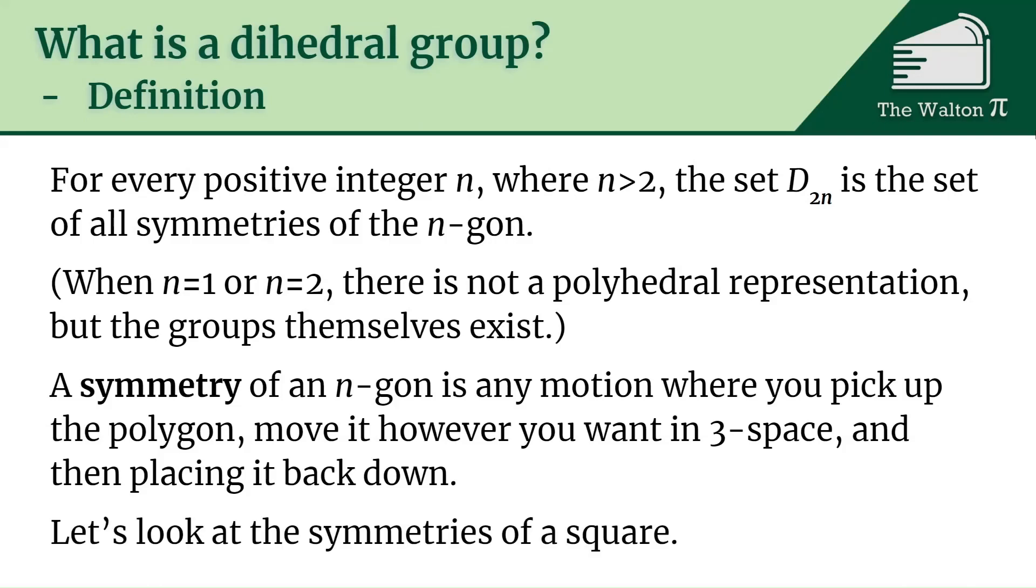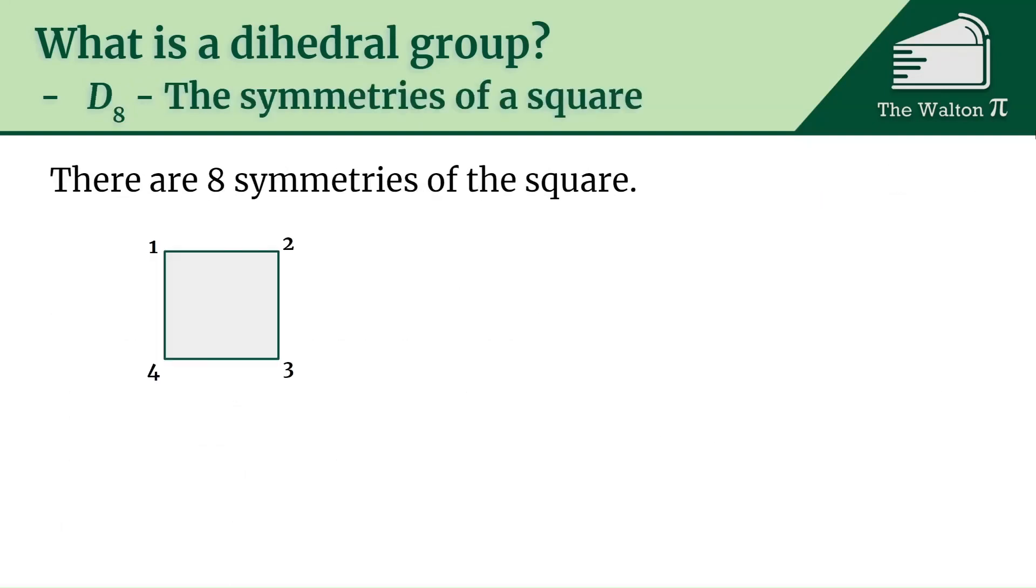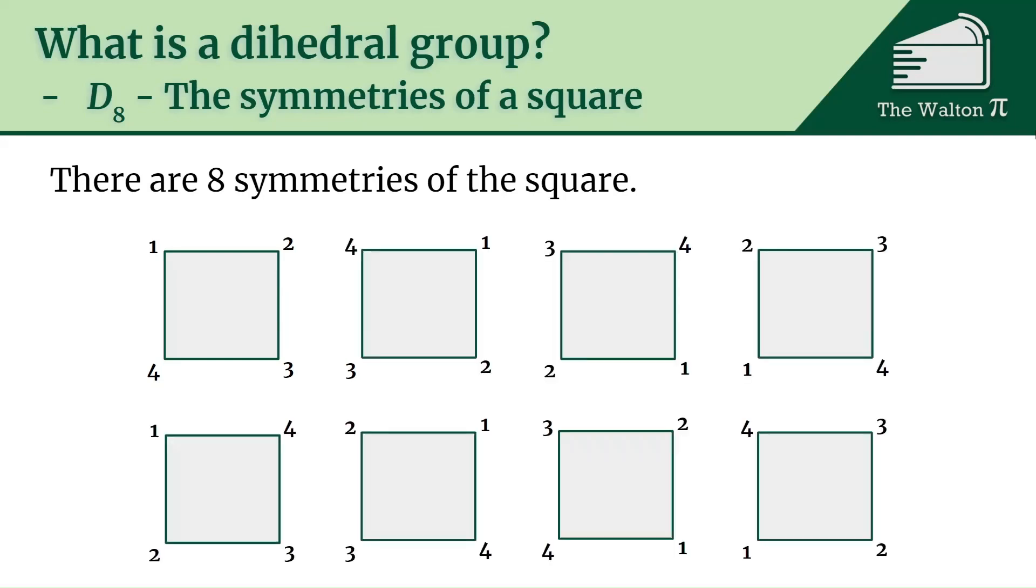For example, the square—that's the four-gon—so let's look at the symmetries of a square. There are going to be eight symmetries of the square. We have all of these, if we look at one, two, three, four as we go around clockwise. We can rotate it, we can flip it, we can flip it and rotate it—all of these are the symmetries of the square.